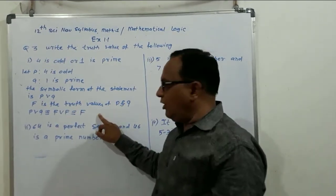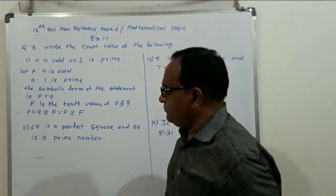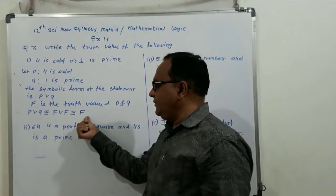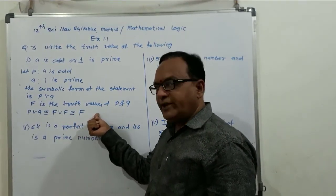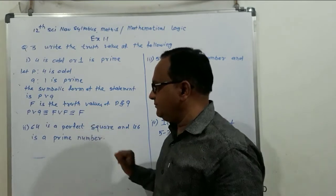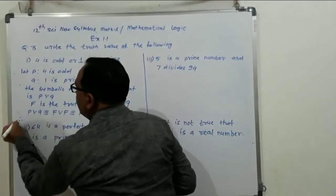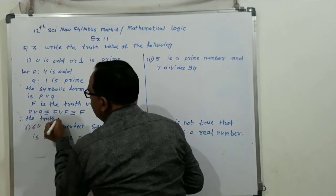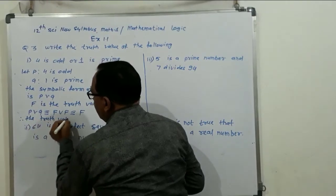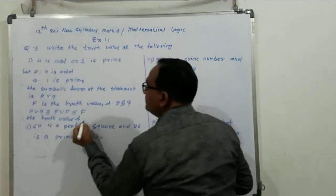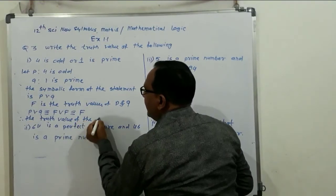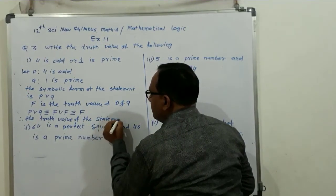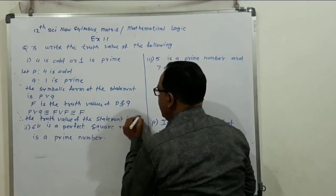In the truth table of disjunction, if both values are false, then the truth value of the disjunction is F. Therefore, the truth value of the statement is F.